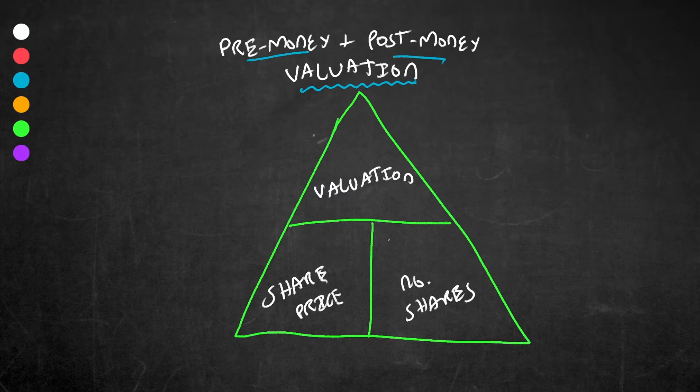If you have two of these values, you can essentially work out the third. If you have valuation and number of shares, you can work out the share price. You divide the valuation by the number of shares, and it will give you share price. If you have valuation and share price, you simply divide the valuation by the share price to get the number of shares. If you don't know valuation but have share price and number of shares, you simply multiply these two together to get the valuation. Easy. I digress.